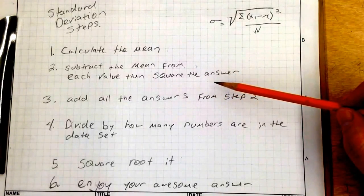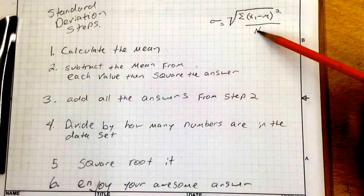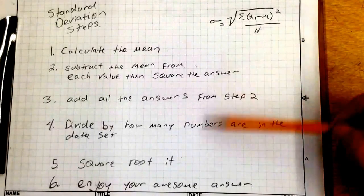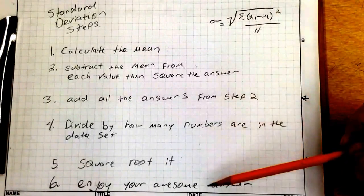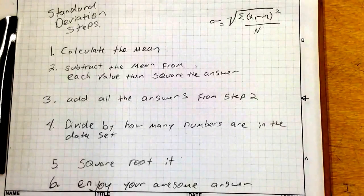Add the answers from step two, divide by how many numbers are in the data set, square root it, and then enjoy your awesome answer.